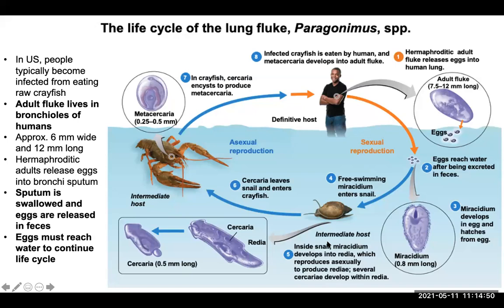The snail is where the asexual life cycle happens, and the intermediate host is where the infectious stage is released. You need to know snail and crayfish: the snail is infected from human feces containing eggs, the crayfish is infected by cercaria released from the snail, and the crayfish harbors the metacercaria that humans ingest.